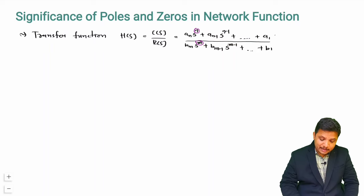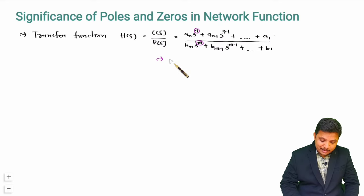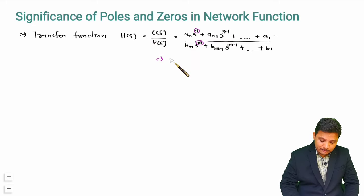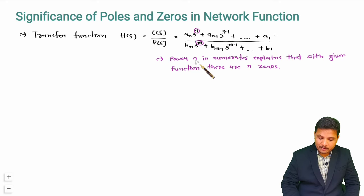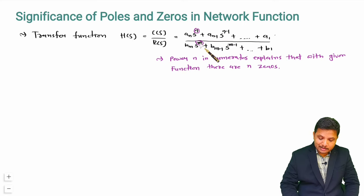So what does this mean? The numerator polynomial having power n means there are n number of zeros in this transfer function. And the denominator polynomial having power m means there are m number of poles.